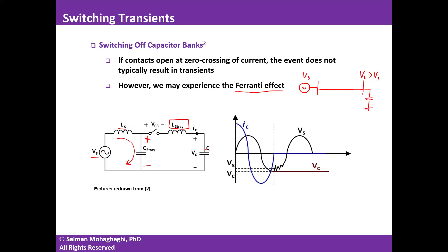At the moment the capacitor is switched off at zero current crossing, the voltage is at peak — in this case, a negative peak. The capacitor will have a voltage of negative peak, which was slightly higher in magnitude than the source peak due to the Ferranti effect. Through some oscillation with frequency determined by L_S · C_stray, the system returns to the source voltage magnitude.